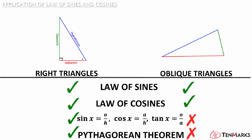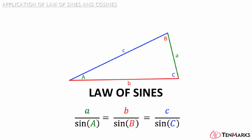Let's review the Law of Sines and Cosines. The Law of Sines tells you that the ratios of the triangle's side over the sine of its opposite angle are all the same. In other words, the length of side A over the sine of angle A is equal to the length of side B over the sine of angle B, which is equal to the length of side C over the sine of angle C.